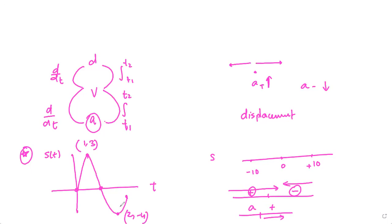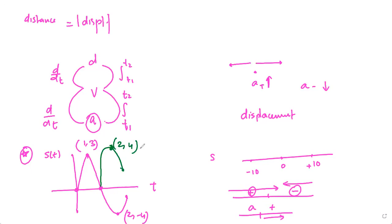If asked for maximum displacement, you can see it's -4, or magnitude 4. Distance is the absolute value of displacement. When you draw the absolute value of this graph, the point (2, -4) becomes (2, 4), so the maximum distance is 4 units. This is a very common and clear picture of distance versus displacement graphs: take the absolute value of the displacement graph to get the distance graph.